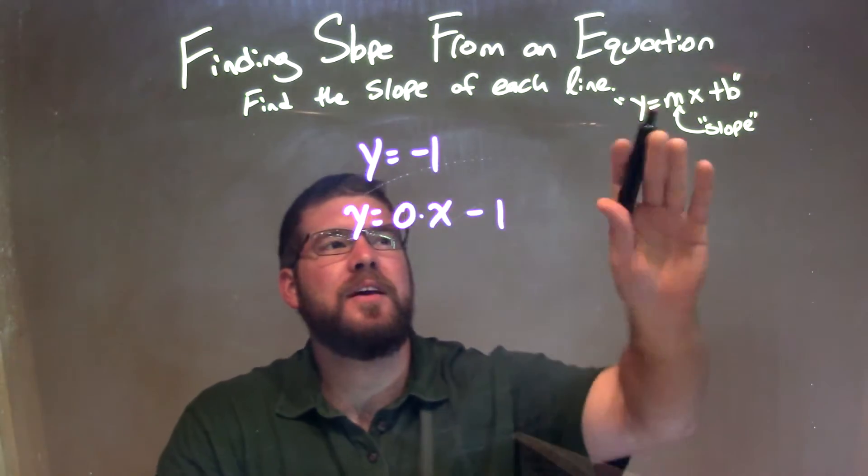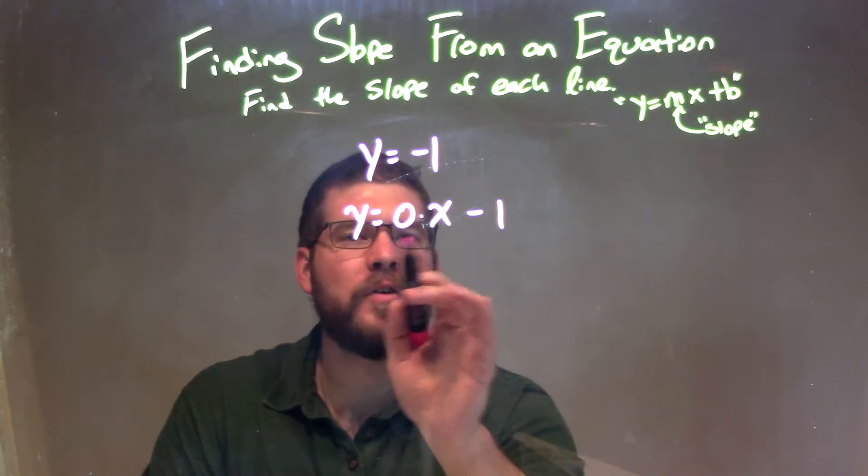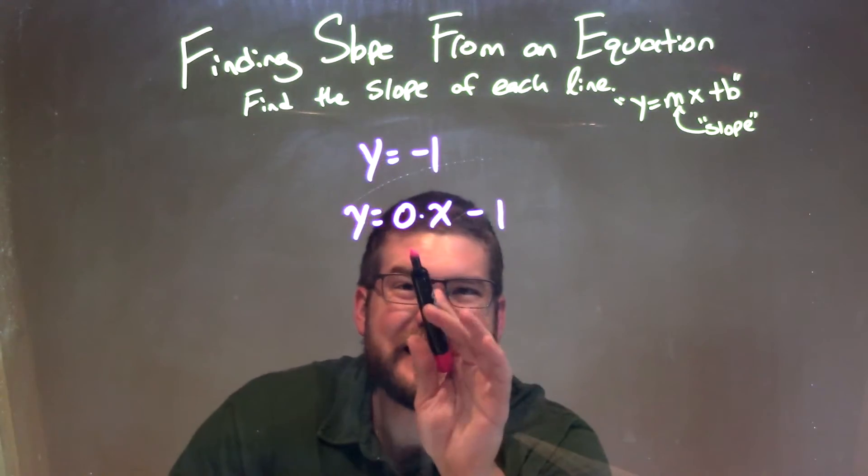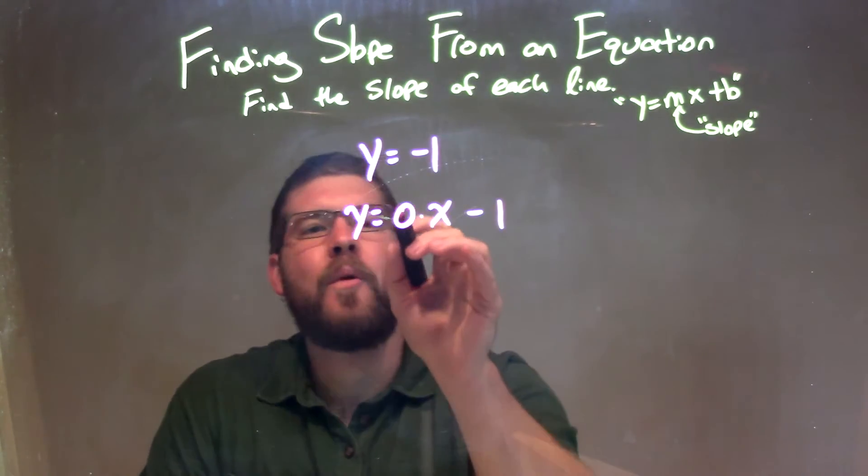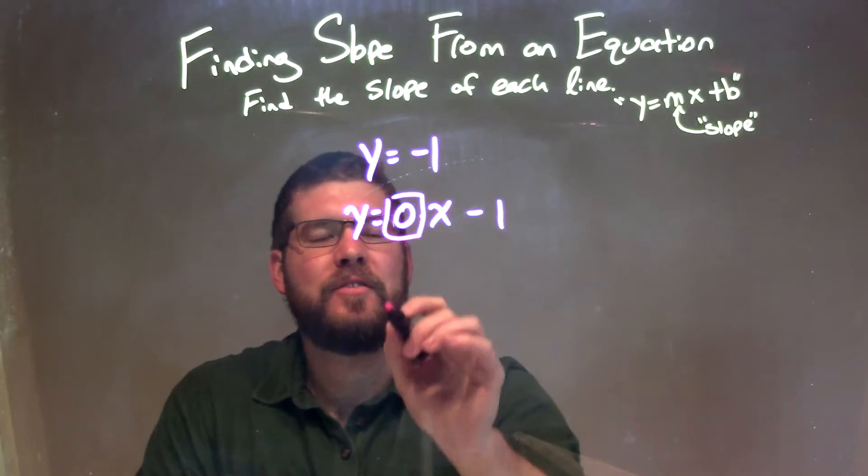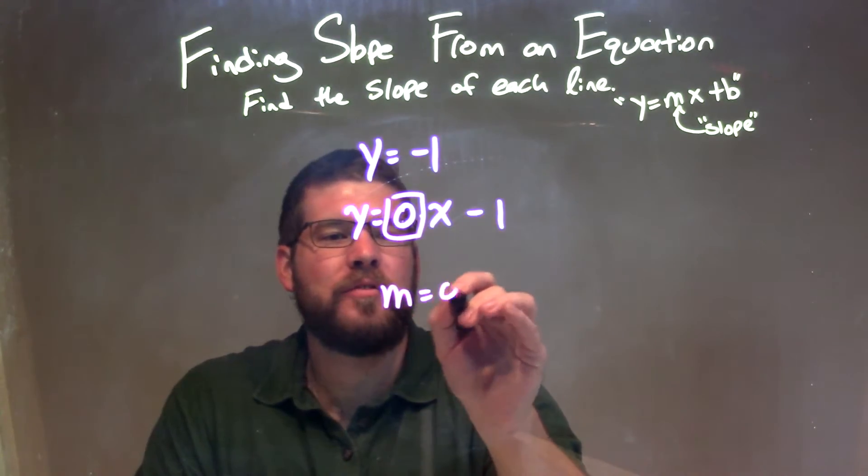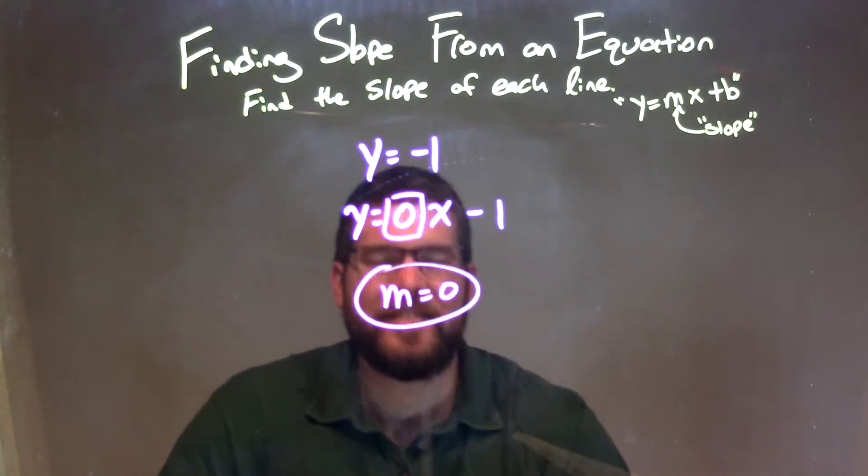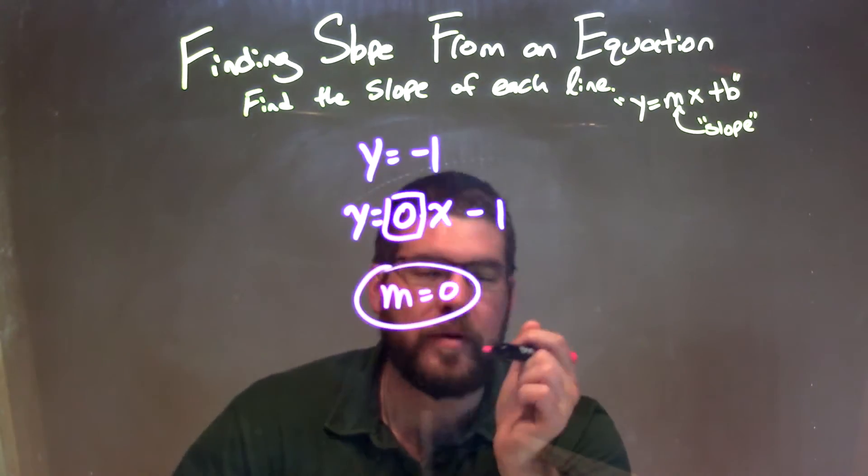But that helps us see what our slope value is, the coefficient in front of x, which is 0. So once we see that, our coefficient is just 0, so m equals 0, and our slope here is going to be 0, and that's like a horizontal line right there.